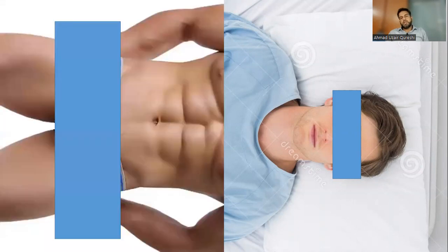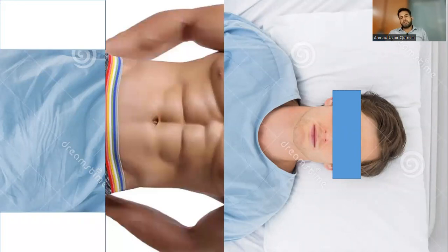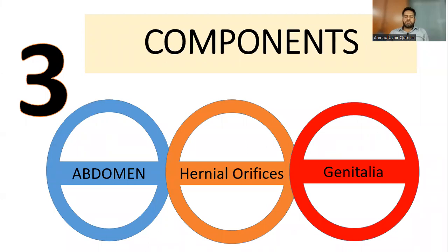We do the examination of the abdomen first, covering the genitalia and thighs initially. Once the examination of the abdomen is complete, we move on to the genitalia. Remember, there are three components of the examination: examination of the abdomen, then the hernia orifices and genitalia. Your marks will be deducted if you do not complete any one of these parts.